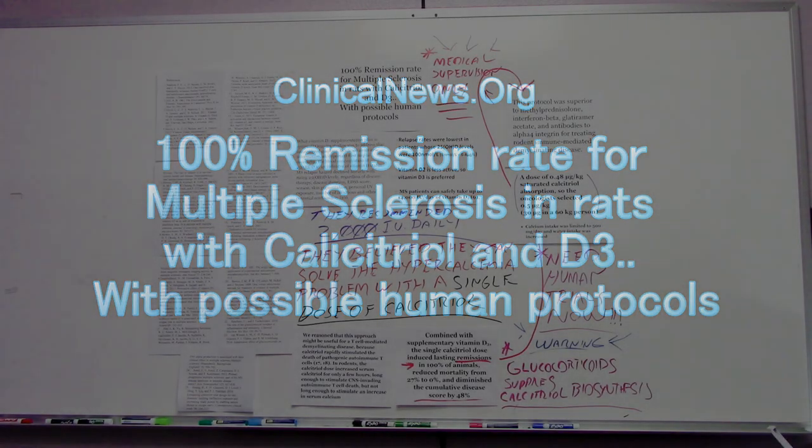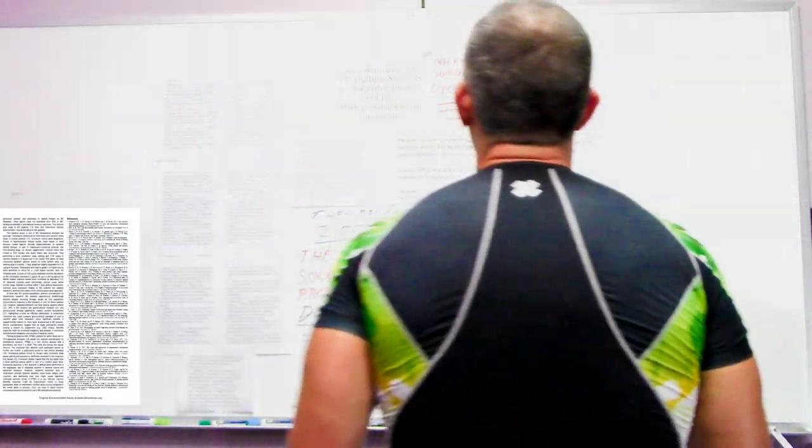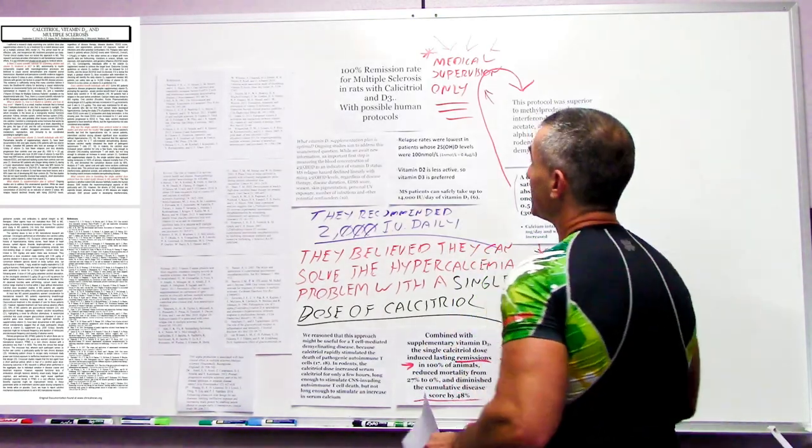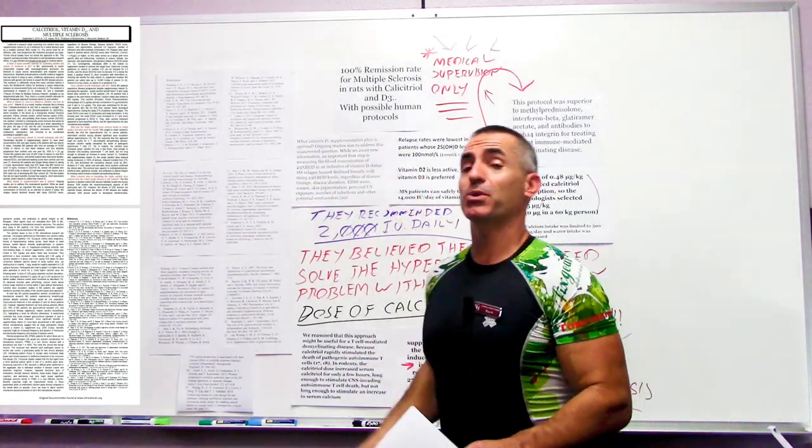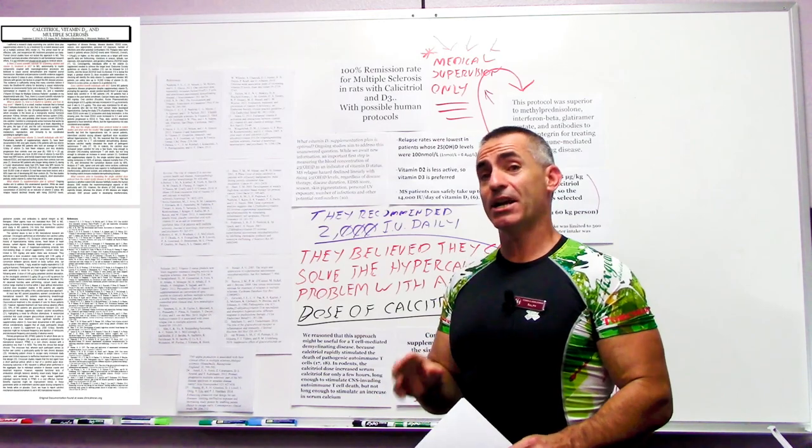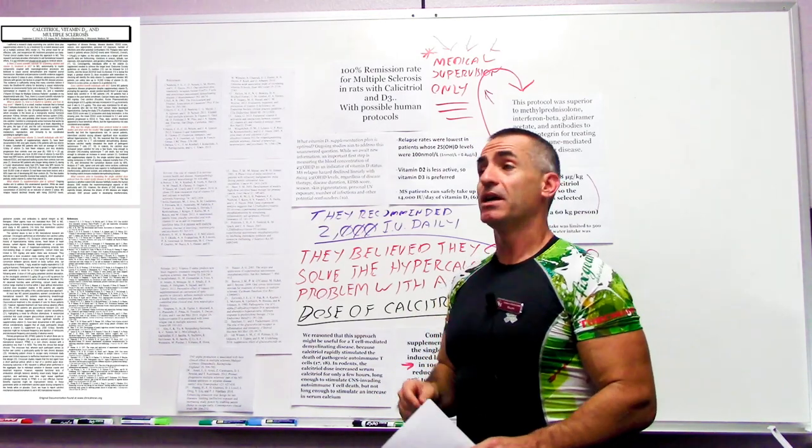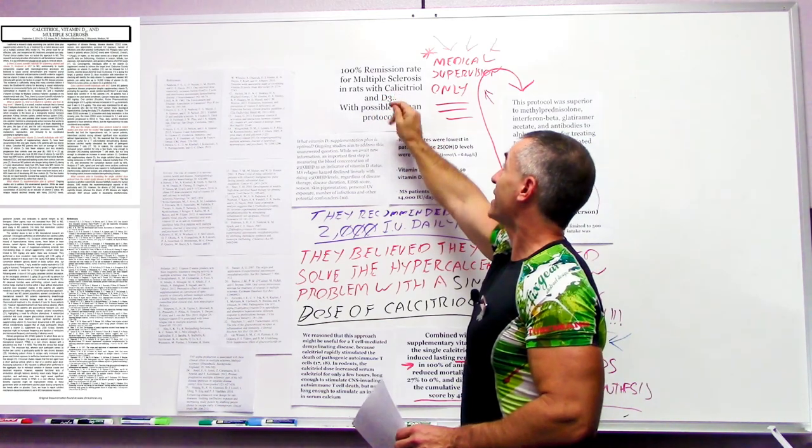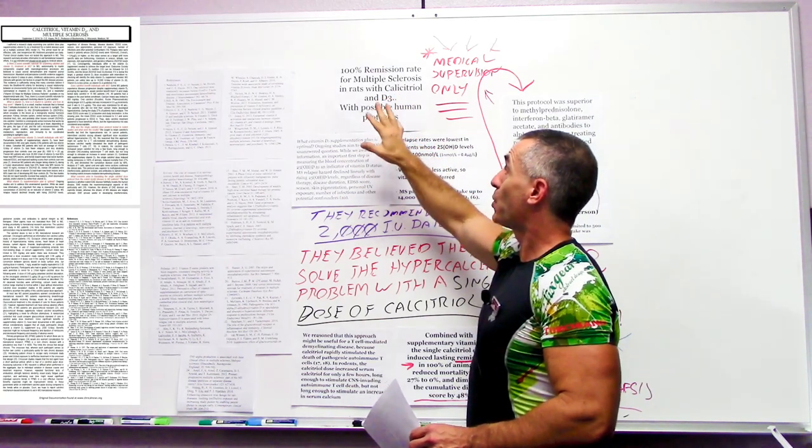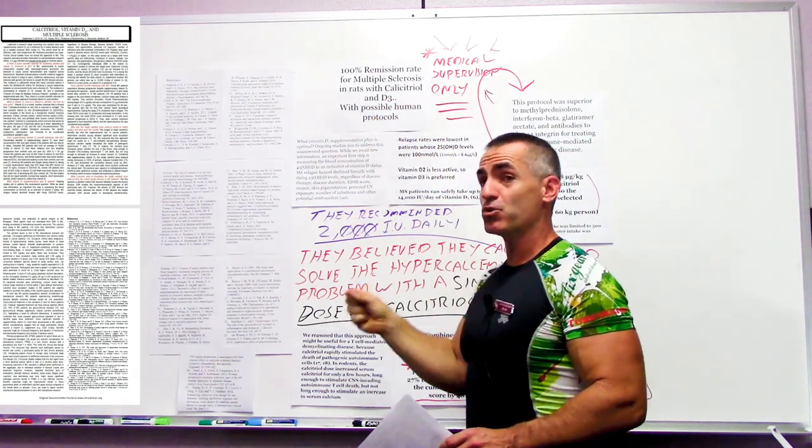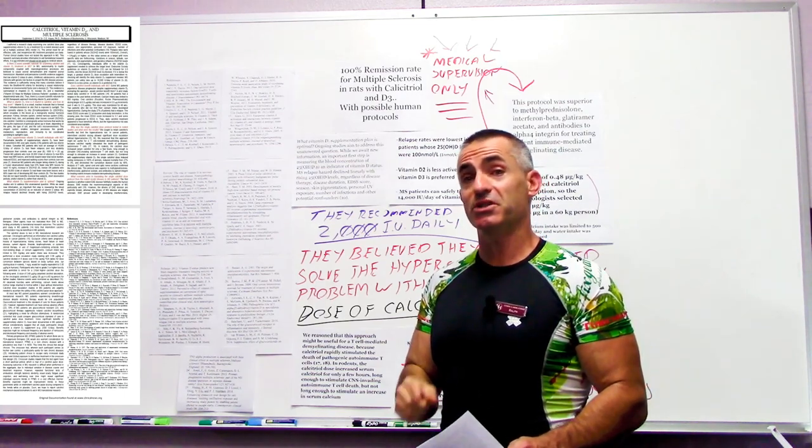100% remission rate for multiple sclerosis in animals with calcitriol and D3. This discussion today regards potentially future human protocols for pulsing or injection of calcitriol followed with oral vitamin D3 and the potential remission of multiple sclerosis in humans.